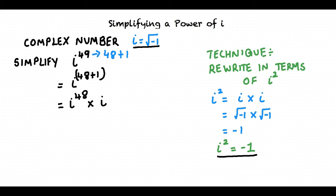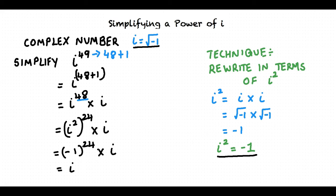Using the sum of powers rule, this expression can be written as i to the power 48 times i. Now, i to the power 48 can be written in terms of i squared. Thus, i raised to the power 49 equals i squared raised to the power 24 times i. Replacing i squared with negative 1, we get i to the power 49 equals negative 1 raised to the power 24 times i, which equals i. The simplified form of i to the power 49 is i.